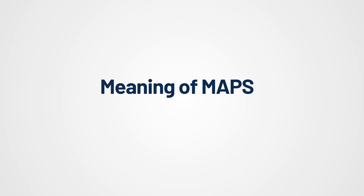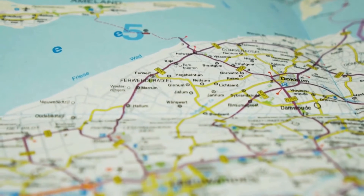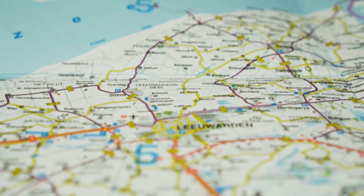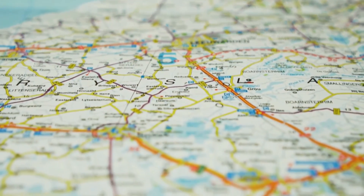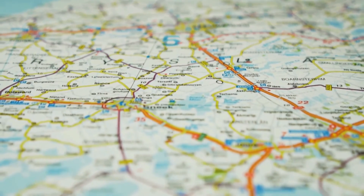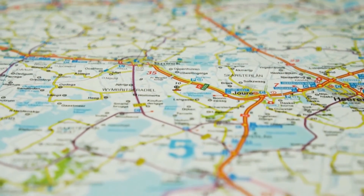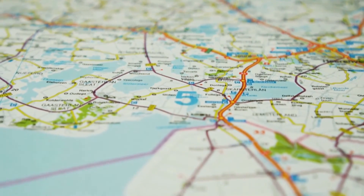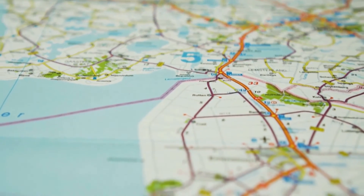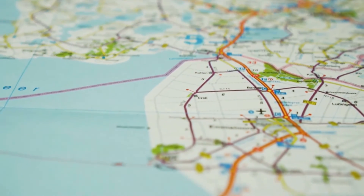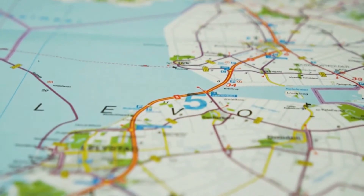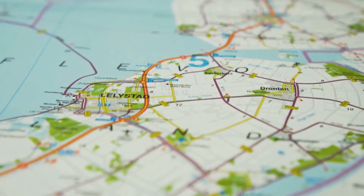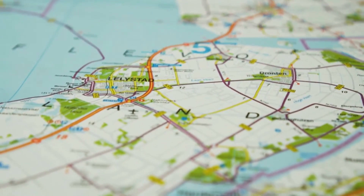What is the meaning of map? Maps are visual representations of geographic information designed to help people understand and navigate the world around them. They provide a relationship between various features of the Earth's surface, such as landforms, bodies of water, political boundaries, and human settlements.